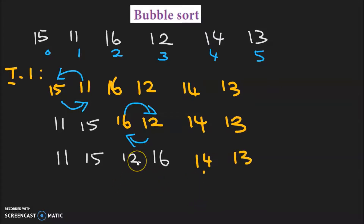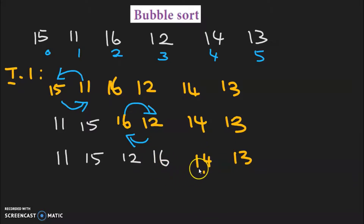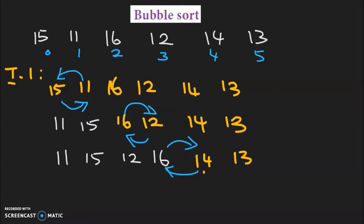We will compare and exchange. In the next comparison, the fourth element and fifth element will compare: 16 and 14. There should be an interchange. So if we exchange: 11, 15, 12, 14 will come here, and 16 and 13 remain. 13 remains in its position.